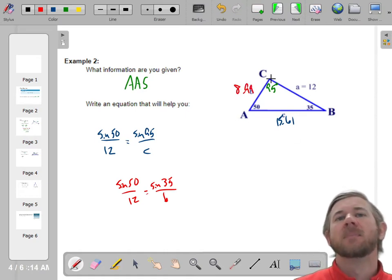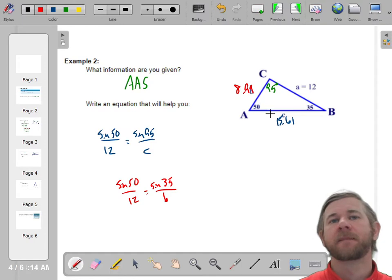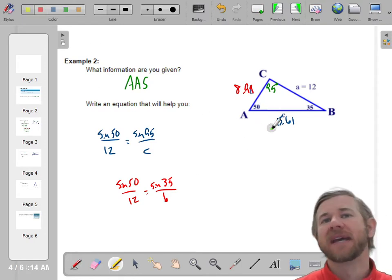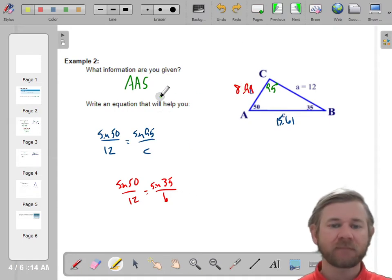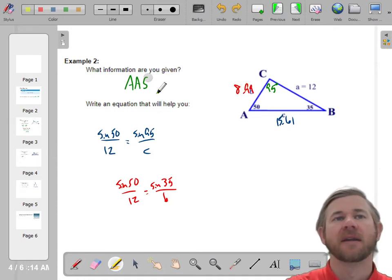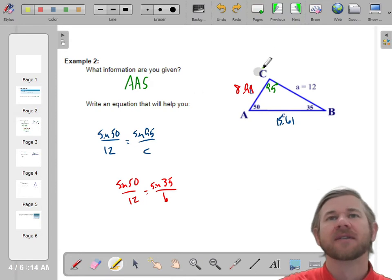So we found little C is 15.61, little B is 8.99. Now let's do what I said before. The biggest angle is 95. Is that the biggest side? Yes, that's good. The smallest angle is 35. Is that the smallest side? Yes, that's good. Okay. So I feel good about it. As long as your angle side pairs are in the right order, that's usually a good side.